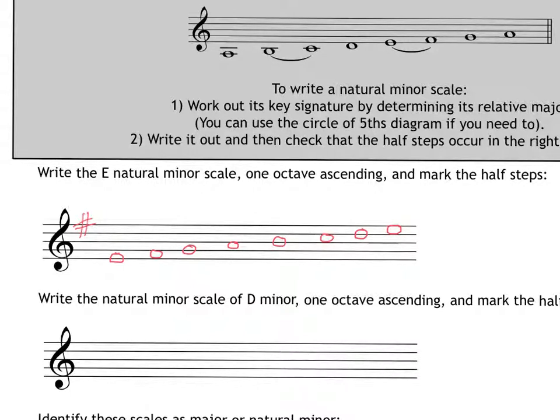Mark your half steps with a slur. My half steps, where are they? Well, it's a whole step from E to F sharp. F sharp to G right here is a half step. G to A is a whole step. A to B is a whole step. B to C is a half step. C to D is a whole step. D to E is a whole step. So, my half steps are between notes 2 and 3 and 5 and 6, always in a natural minor scale.